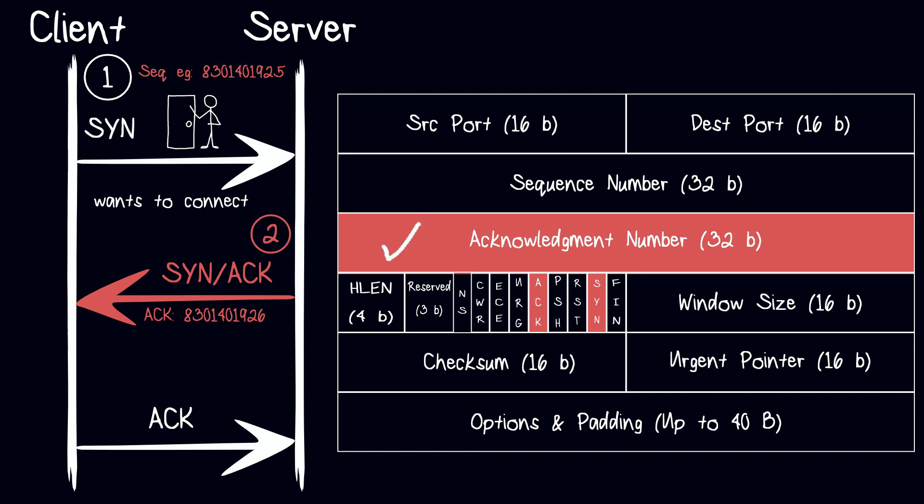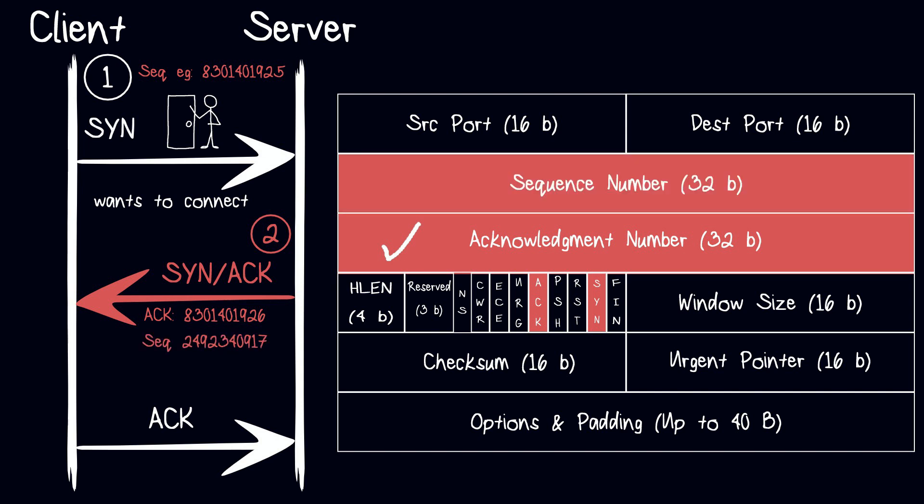In the SYN-ACK, the server will also send a random sequence number and wait for the client to acknowledge it, indicating that the server is also willing to establish a connection. You can think of it as someone opening the knocked door.